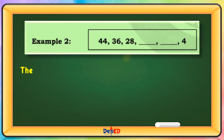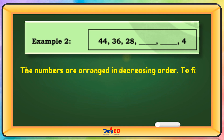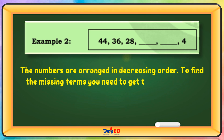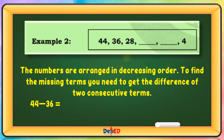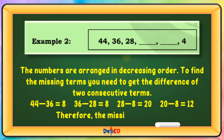The numbers are arranged in decreasing order. To find the missing terms, you need to get the difference of two consecutive terms. 44 minus 36 equals 8. 36 minus 28 equals 8. 28 minus 8 equals 20. 20 minus 8 equals 12. Therefore, the missing terms are 20 and 12.